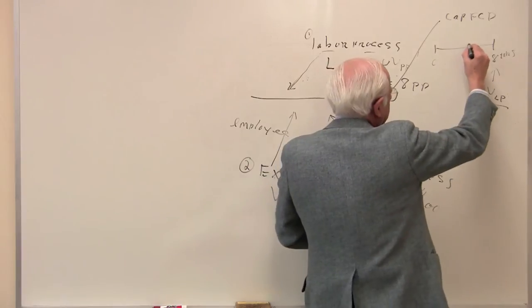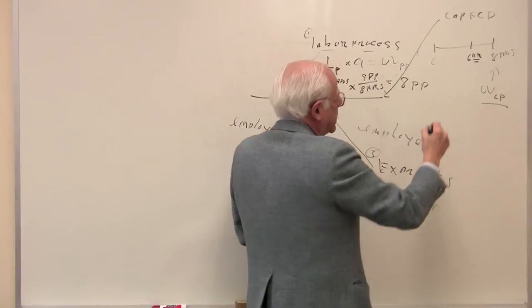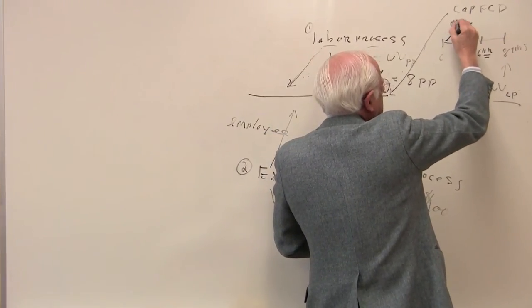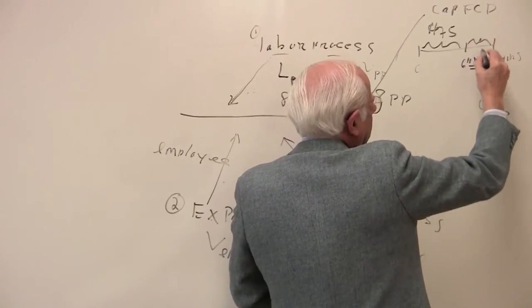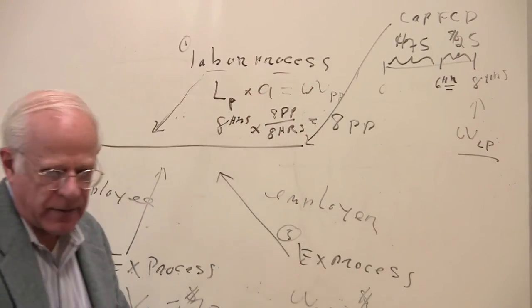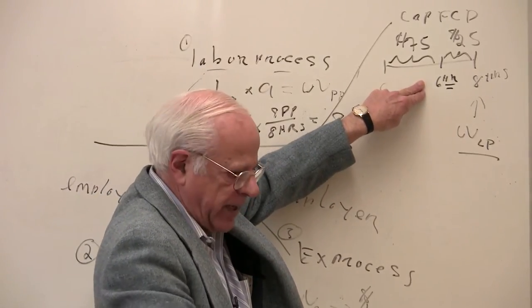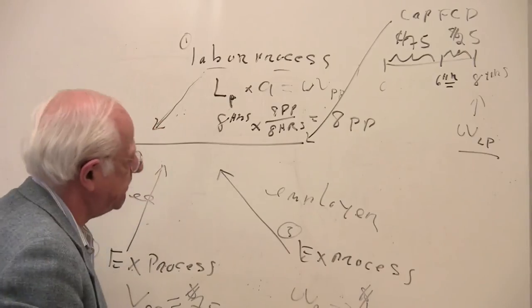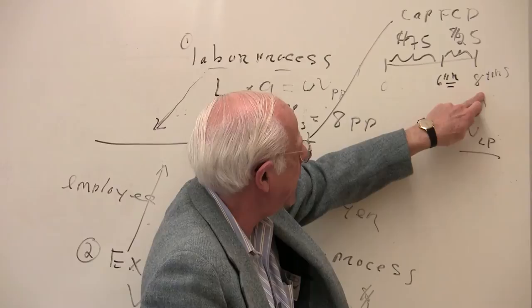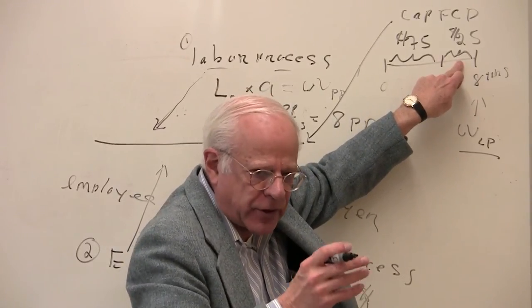And suppose, in my example here, after six hours, three quarters, the worker gets paid $75, works two more hours, and gets $25. Let me do that again. The worker, after six hours, gets paid $75 by my assumption, but the worker continues to work for two more hours, six to eight, producing another $25. But remember the logic now.